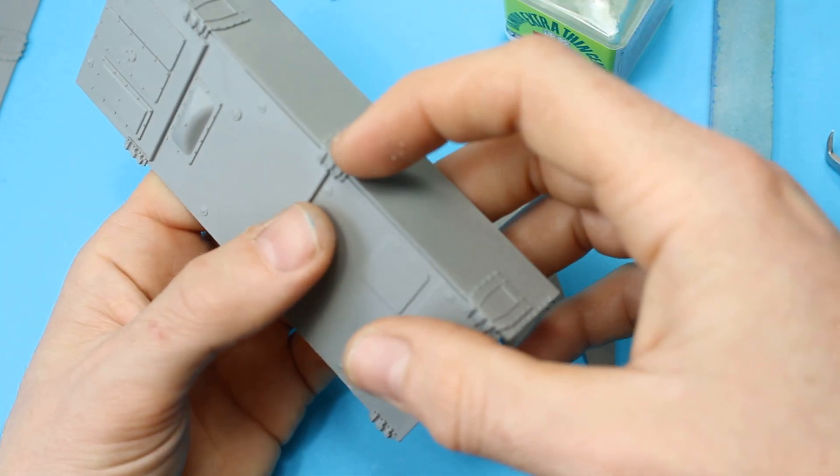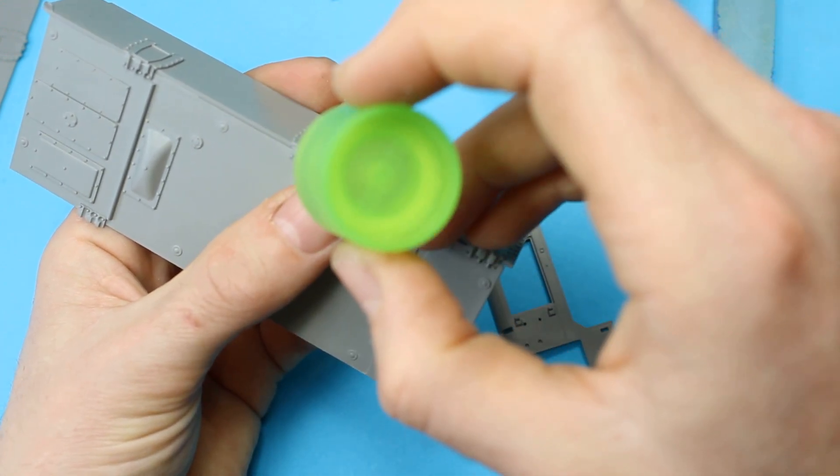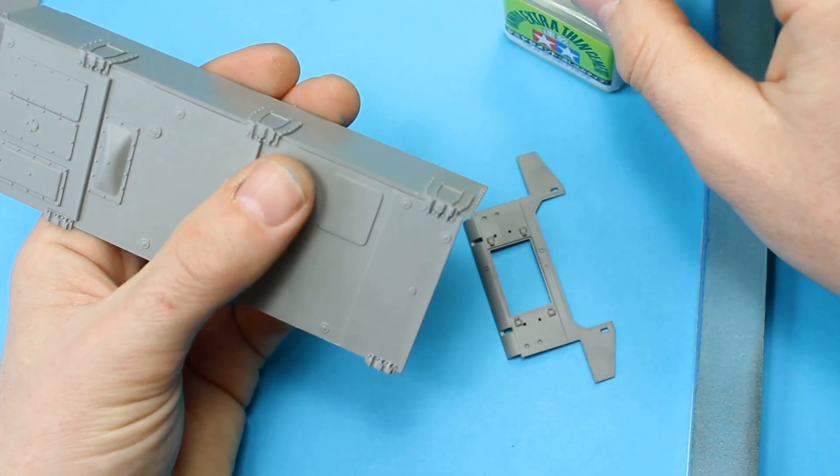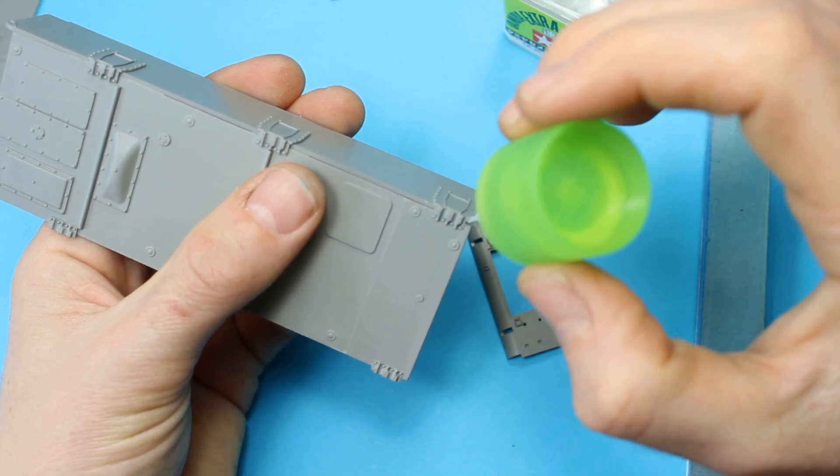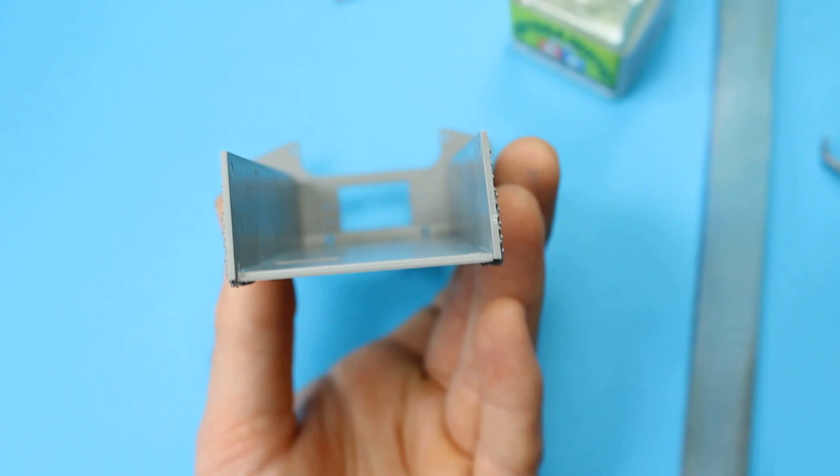And using the Tamiya extra thin cement here, it works very well with this plastic. It does respond extremely well. You get a nice join, sets very quick and you get a good sort of bead of plastic.